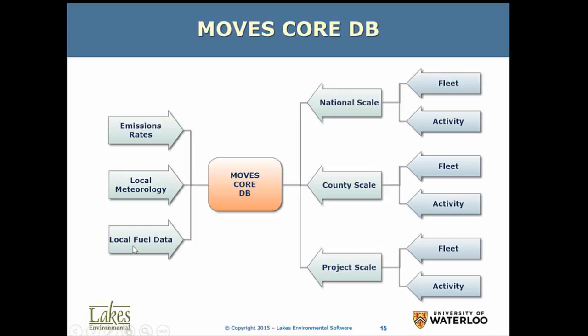Local fuel data is also important, as different jurisdictions will have different fuels. Even if everything comes from the same refinery, some places use more corn ethanol, so we need that data. At national scale, we have fleet and activity — average vehicle miles traveled or vehicle kilometers traveled. Activity is basically driving cycles plus VMT. At county scale, we have fleet activity. At project scale, it is much smaller — planning for new roadways is an example of project scale.